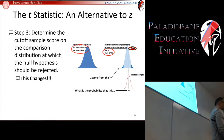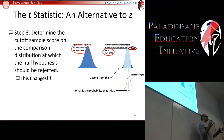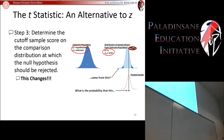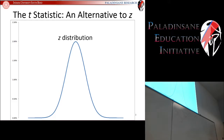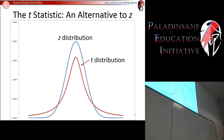Step three: determining your cutoff scores. This changes because we've changed our comparison distribution — instead of a z-distribution, we now have a t-distribution. The t-distribution looks a lot like the z-distribution, but there are two big differences. Number one: the t-distribution has more area in the tails — it's thicker on the outside compared to a z-distribution. Number two: the shape of the t-distribution changes as your sample size increases, whereas the z-distribution just gets squeezed in.